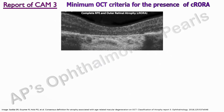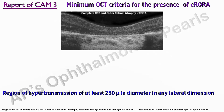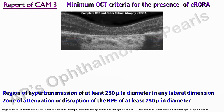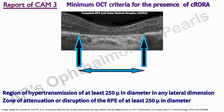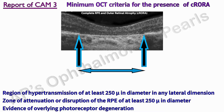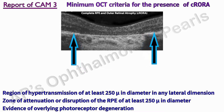The third report detailed the minimum criteria for the presence of C-RORA, which included three inclusive and one exclusive criteria. The inclusive criteria are: a region of hypertransmission of at least 250 microns in diameter in any lateral dimension; a zone of attenuation or disruption of the retinal pigment epithelium of at least 250 microns in diameter; and evidence of overlying photoreceptor degeneration. Photoreceptor degeneration includes loss of the interdigitation zone, loss of the ellipsoid zone, and loss of the external limiting membrane.